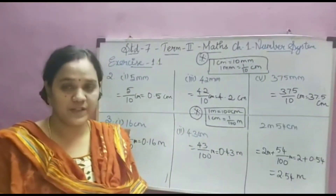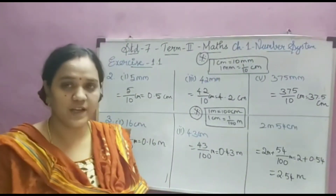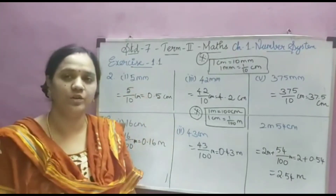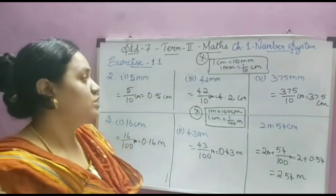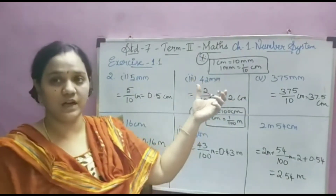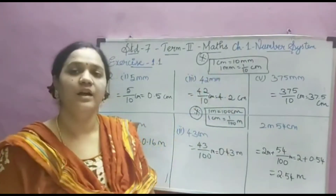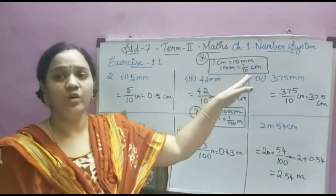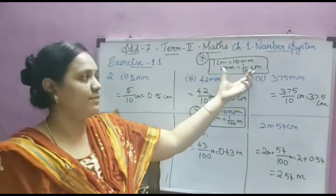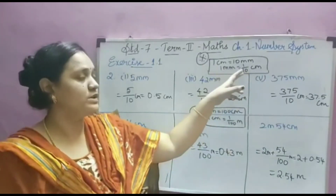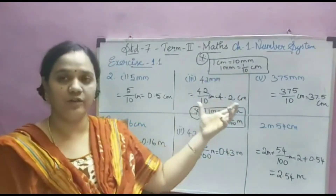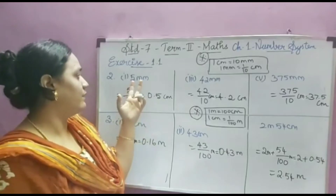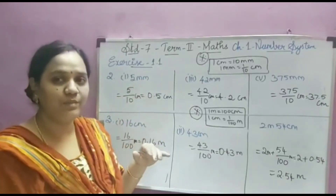Second problem: express the following in centimeters using decimals. The question gives millimeters and we have to convert to centimeters. We know that 1 centimeter equals 10 millimeters. So if we are converting millimeters to centimeters, we have to divide by 10. This is the main fact you should know.